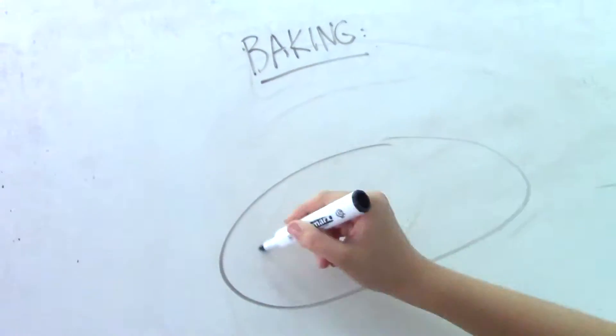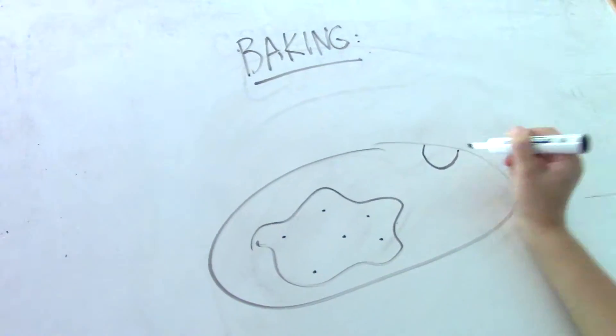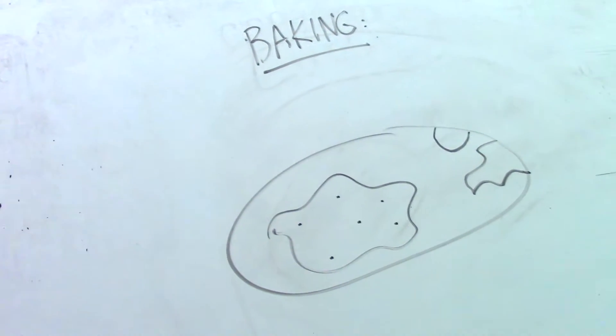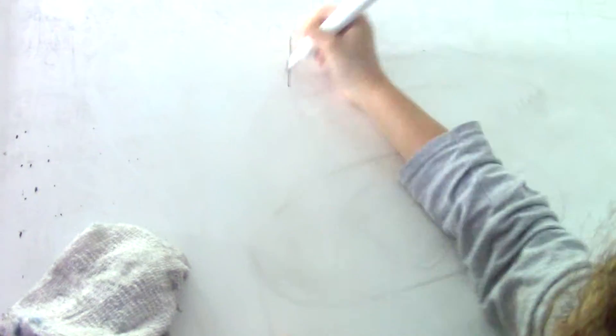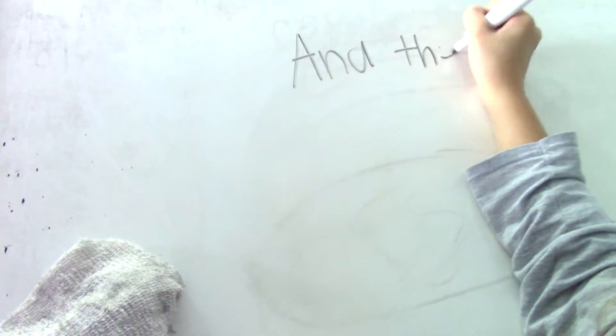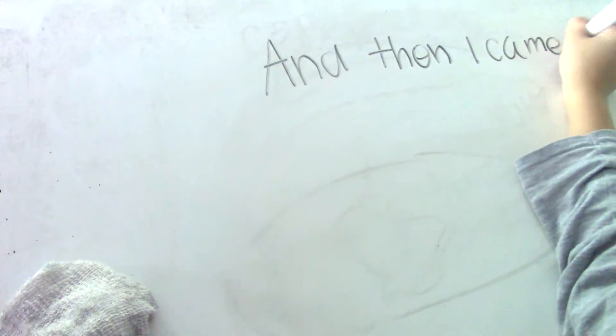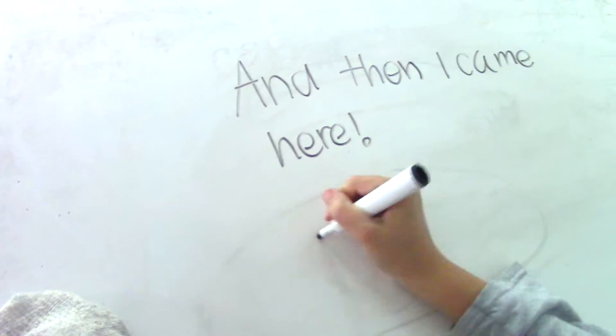Then we went to baking and I made crepes with chocolate syrup and whipped cream. It was really good and I was feeling a lot better. Then I came to draw my life and that's where I made this. Thanks for watching.